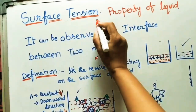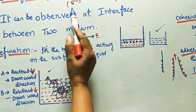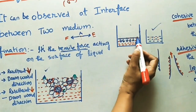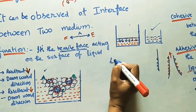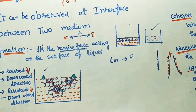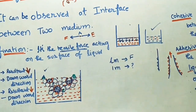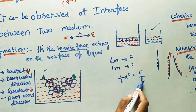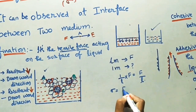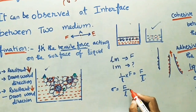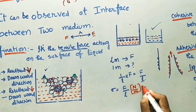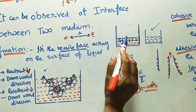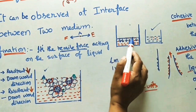We use the symbol sigma for surface tension. Is it possible to find the formula for surface tension? Let us assume the length of the container is L meters. For this L-meter length, a tensile force F is acting. We always calculate how much tensile force acts per 1 meter: that gives us F divided by L. So surface tension sigma equals force divided by length. The units are Newtons per meter.